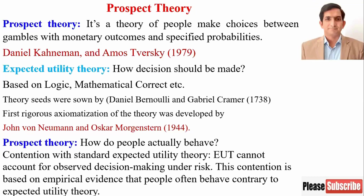In this video, I will explain prospect theory. Prospect theory tells us about how people make choices between gambles with monetary outcomes and specified probabilities. This theory was developed by Daniel Cunningham and Emma Strachey in 1979, and it is the foundation of behavioral finance.